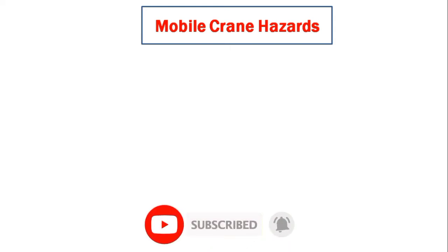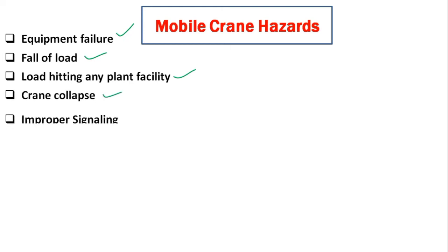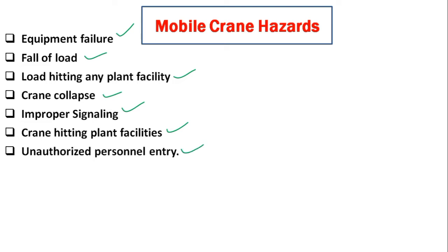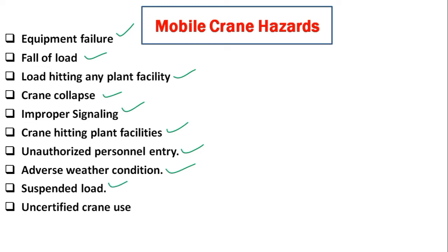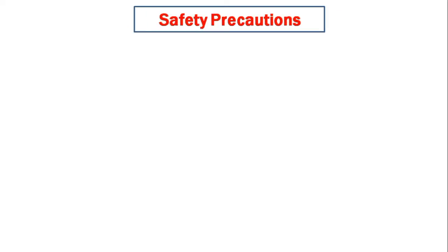Mobile crane hazards include: equipment failure, fall of load, load hitting any plant facility, crane collapse, improper slinging, crane hitting plant facilities, unauthorized personnel entry, adverse weather conditions, suspended load, uncertified crane in use, working near overhead power lines, and uneven ground conditions.